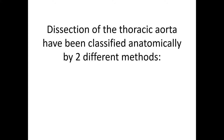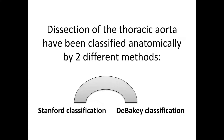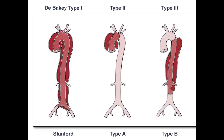Dissection of the thoracic aorta has been classified anatomically by two methods: the Stanford classification and the DeBakey classification. The DeBakey classification is surgical: Type 2 involves only the ascending thoracic aorta; Type 3 involves the ascending thoracic aorta and all through the aorta; and Type 1 involves the whole aorta from ascending downward. In medical practice, we depend on the Stanford classification. Stanford Type A involves the ascending aorta; Type B does not involve the ascending aorta.